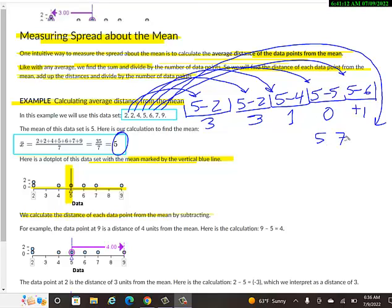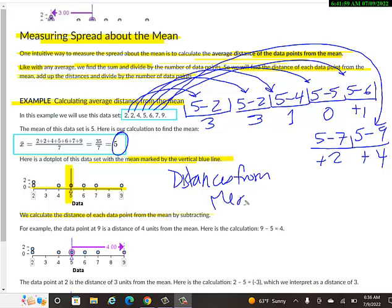So the next data point was 7. We're going to subtract that from 5. That'll be negative 2, but we're just going to make it positive. We got the last data value is 9. We'll subtract that from 5 and get negative 4, but I'm going to make it positive. So these, the distances from the mean are all listed there.